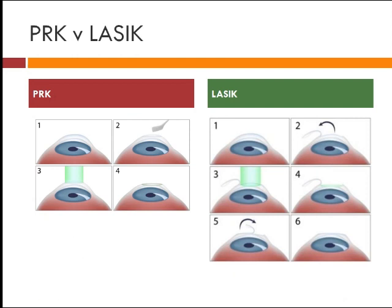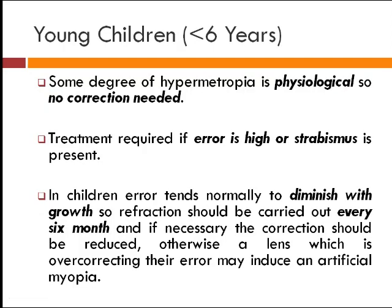In LASIK it is a slightly modified procedure in which a flap of the cornea with some stroma is removed, the laser is applied, and the flap is replaced — leading to less pain, less discomfort, and earlier healing. In children younger than six years, some hypermetropia is physiological and requires no correction. Treatment is required if there is squint. With increasing age the refractive error tends to change, so a child with hypermetropia should be evaluated every six months.